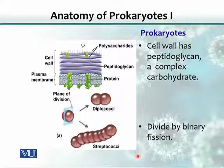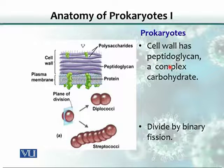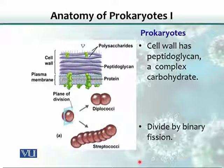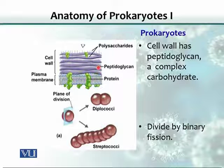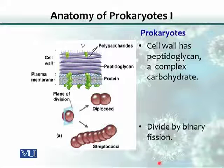If you look at the cell wall of the prokaryotes, it is composed of a substance called peptidoglycan. Peptidoglycan is a complex of peptide — meaning proteins — and glycan, which indicates a carbohydrate moiety associated with protein. This peptidoglycan layer is quite thick in a specific kind of bacteria called gram positive. These prokaryotes also differ in their cell division — they divide by simple binary fission.